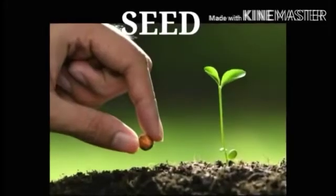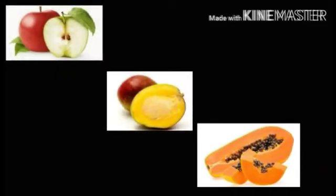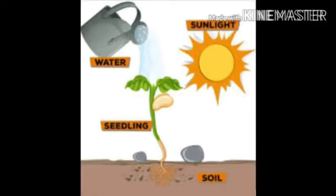Most plants grow from the seed — like apples, mango, papaya. Inside the fruits you have seen seeds. Plants need sunlight, soil, and water to grow.